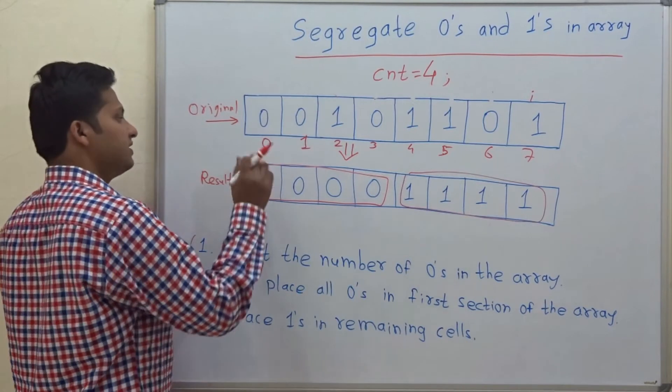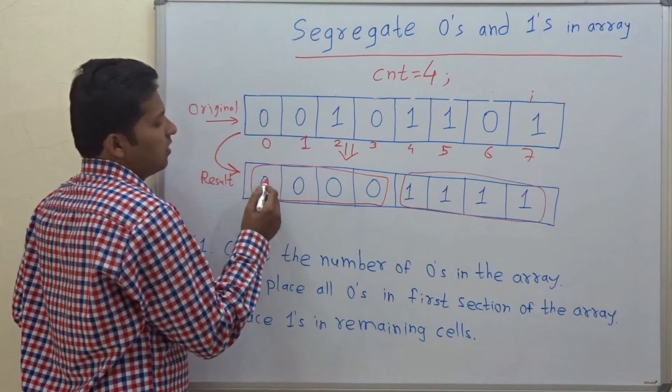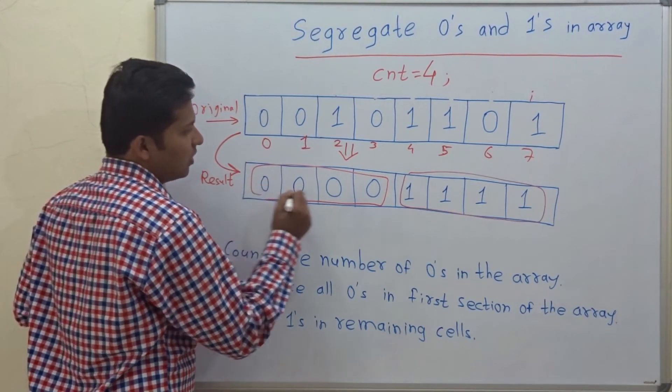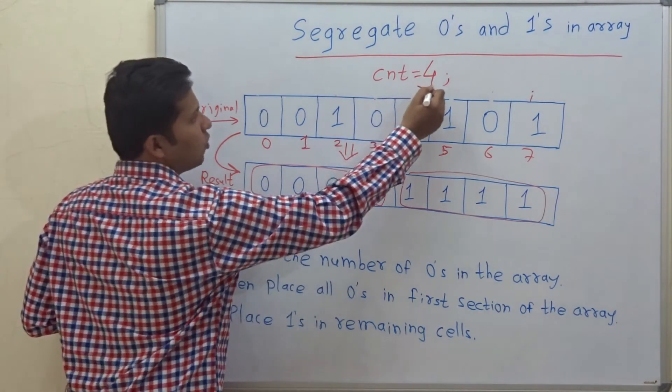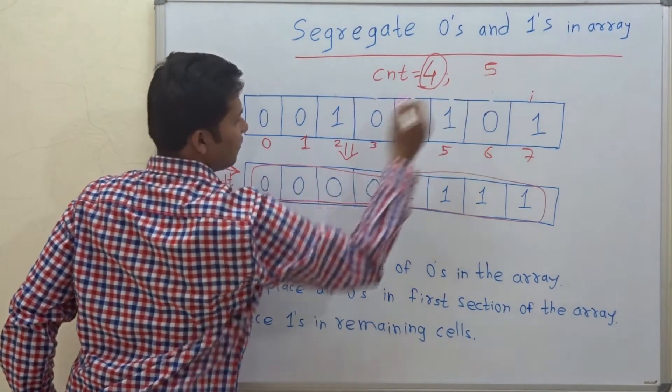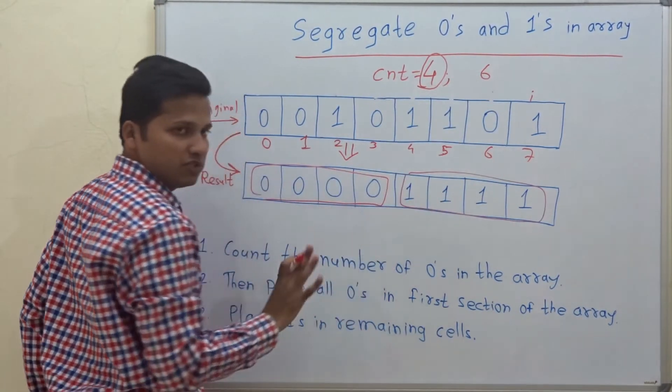So again in the same array, you just have to go on assigning 0 to first four positions because the counter is 4. If the counter is 5 then first 5 positions. If it is 6 then first 6 positions.